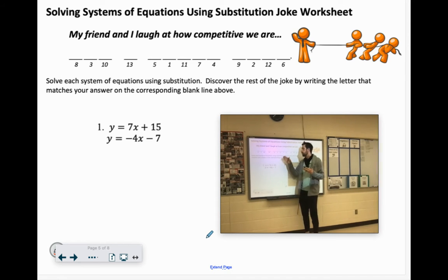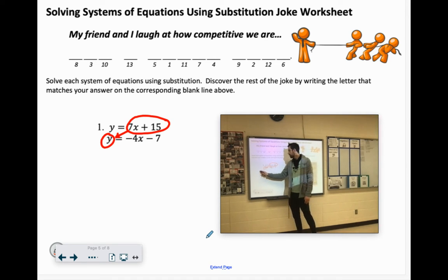So if you look at number one, we already have y equals. That's great. This is what y equals. So in the other equation, anytime I see a y, I can substitute in 7x plus 15. Now, here's the only y. So I'm just going to replace that. I'm going to substitute in 7x plus 15 for that y equals negative 4x minus 7.